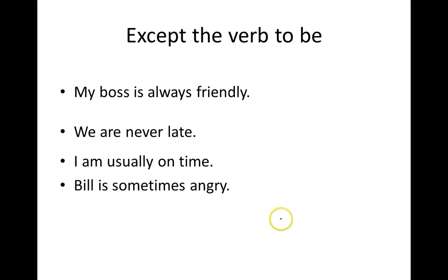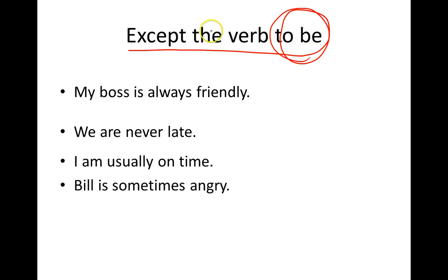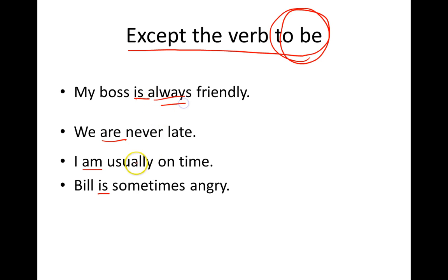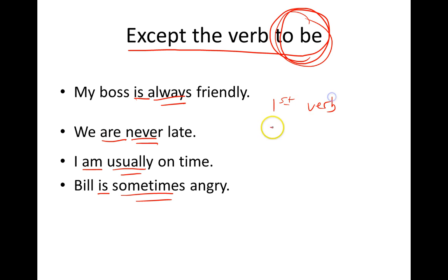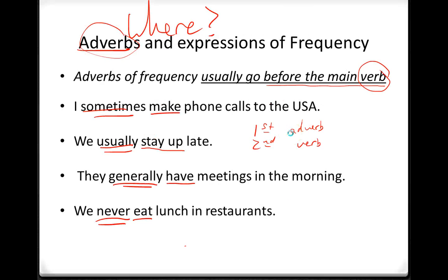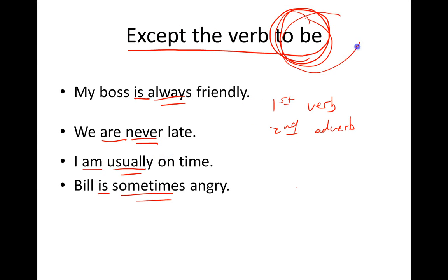But there is an exception — except with the verb 'to be.' Let's find the verb to be: 'is,' 'is,' 'are,' 'am,' 'is.' Where is the frequency adverb? 'Always,' 'never,' 'usually,' 'sometimes.' With the verb 'to be,' you can see that it's first the verb and second the frequency adverb. So almost always, 'usually,' 'sometimes,' 'generally' goes first — except with the verb 'to be,' then they switch and it's the other way around.